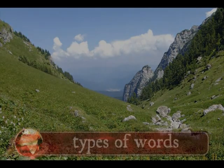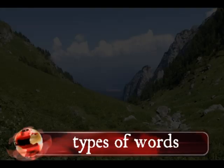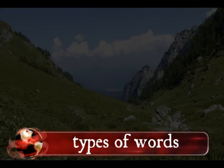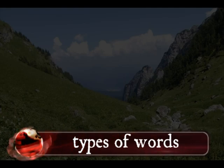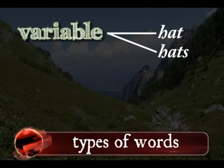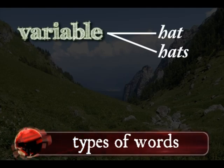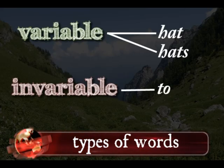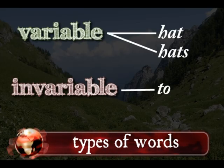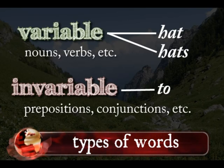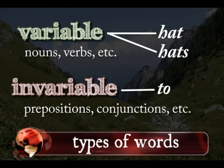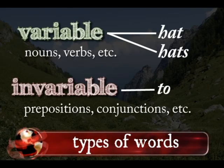Let's divide Romance words up. We'll split them based on whether or not each word has different forms. In English, the word 'hat' has a plural form, 'hats.' These kinds of words are variable. Other words like 'to' and 'to a party' are invariable. In the Romance languages, content words like nouns and verbs can vary, while function words like prepositions and conjunctions tend not to vary.